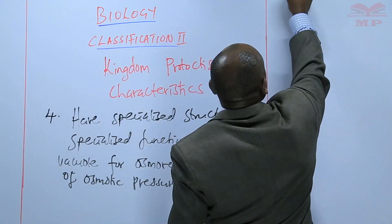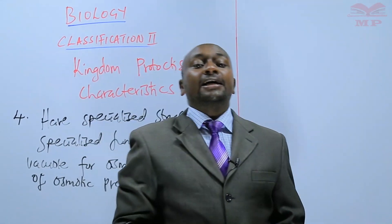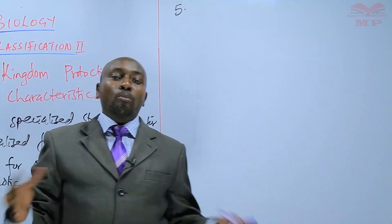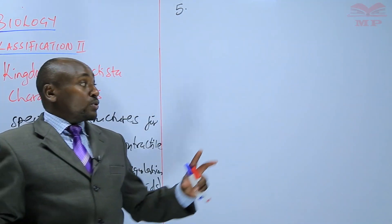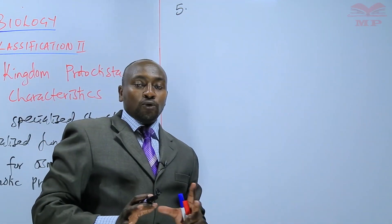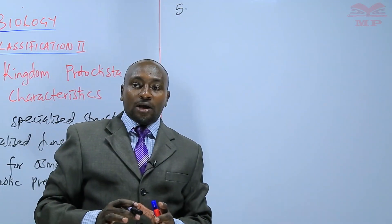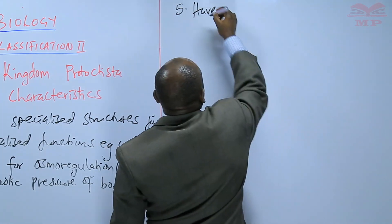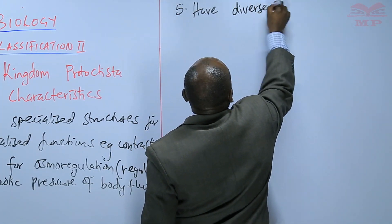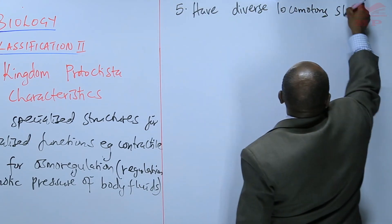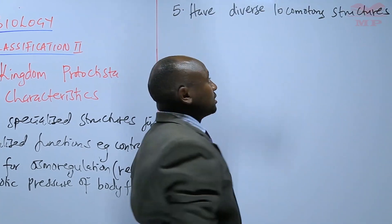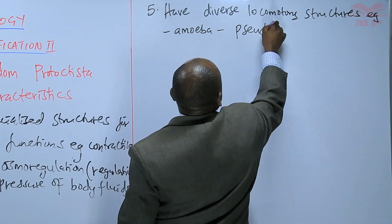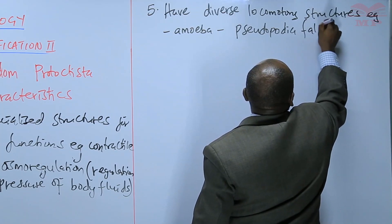Another characteristic of kingdom Protoctista, number five, is that they have locomotory structures — structures used for locomotion. They have diverse locomotory structures. For example, the amoeba has the pseudopodia, which are what we call false feet.